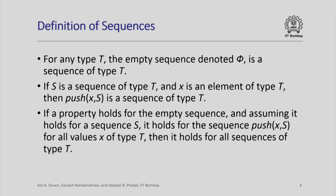Just like 0 was considered to be a natural number, here we have an empty sequence phi which is always considered to be a sequence of type T no matter what the type T is. And just like we had a next operation for numbers, we have another operation here which we call push. If s is some sequence of type T and x is any element of type T, then push x s gives us another sequence of type T. We think of push as an operation which adds one more element to the sequence. The third property essentially says that this is the only way of getting all possible sequences — if a property holds for the empty sequence and assuming it holds for a sequence s, it holds for the sequence push x comma s, no matter what value x you push into the sequence, then it holds for all sequences of type T.